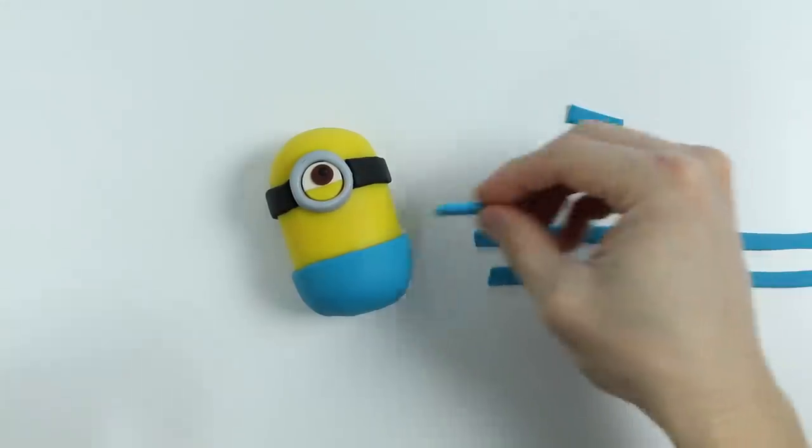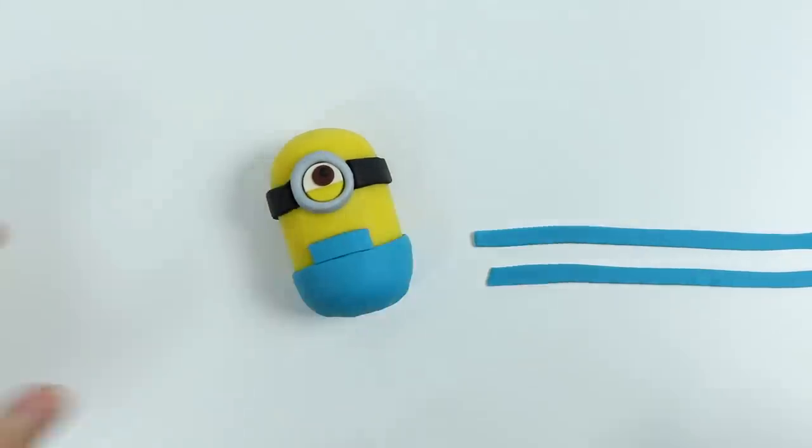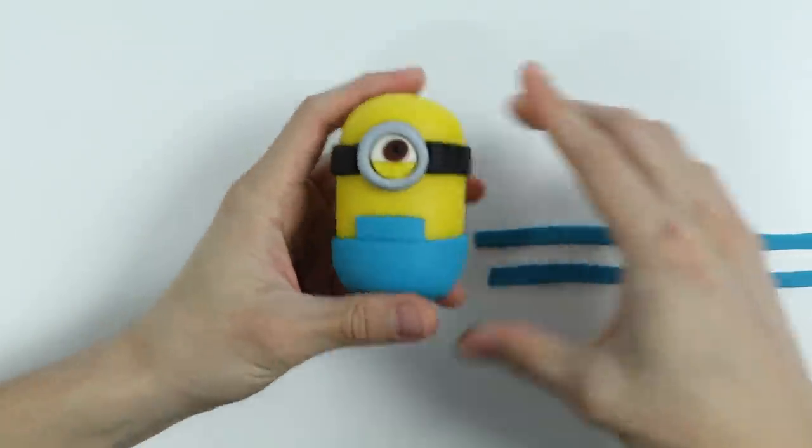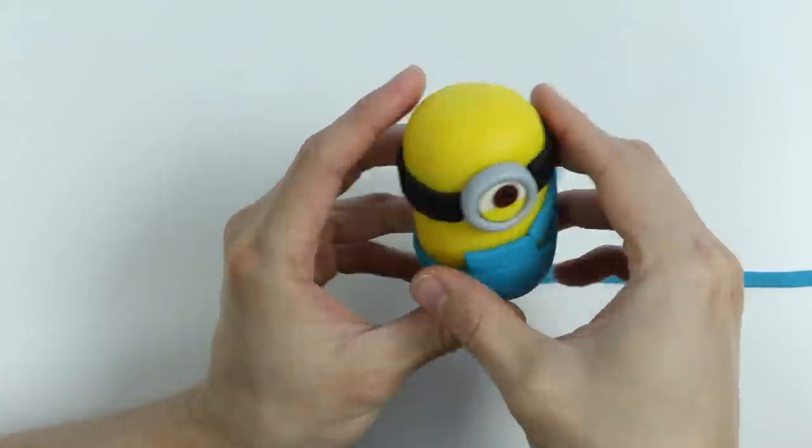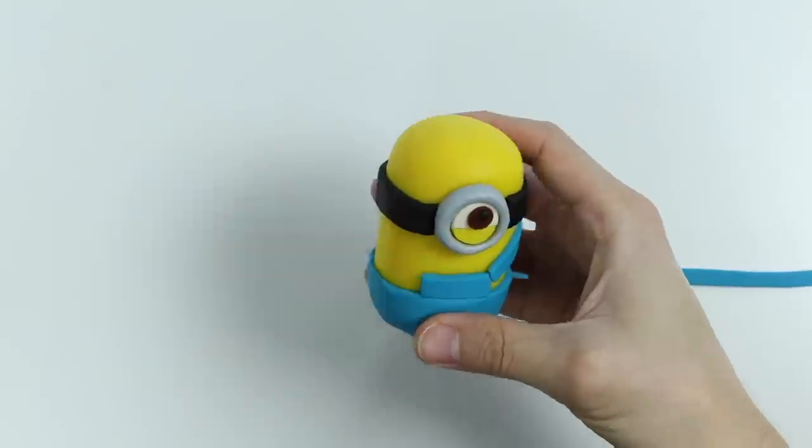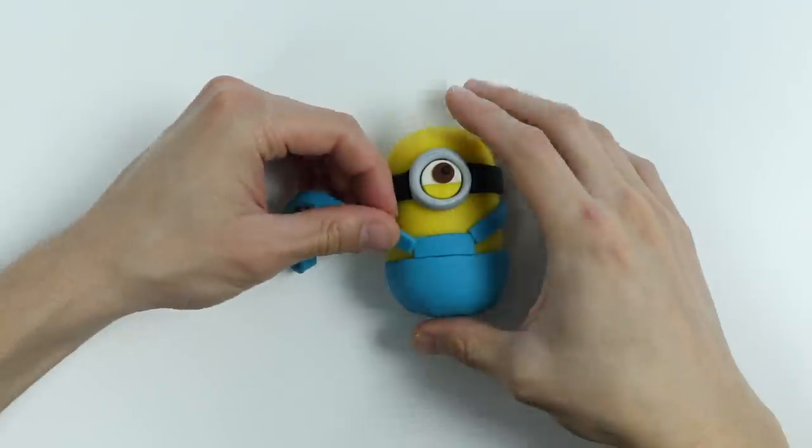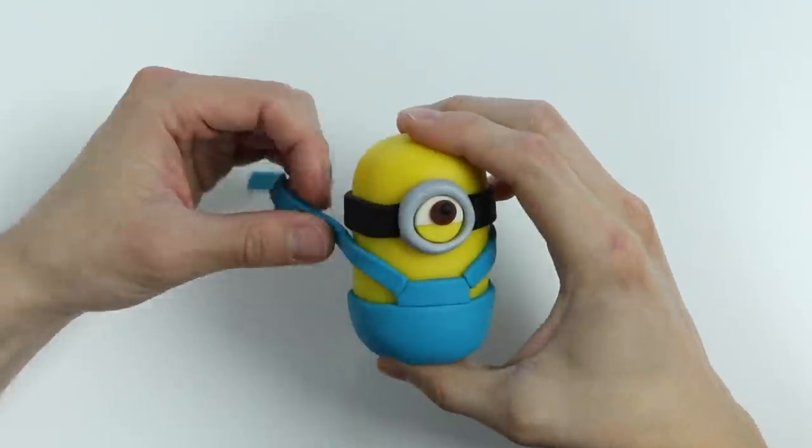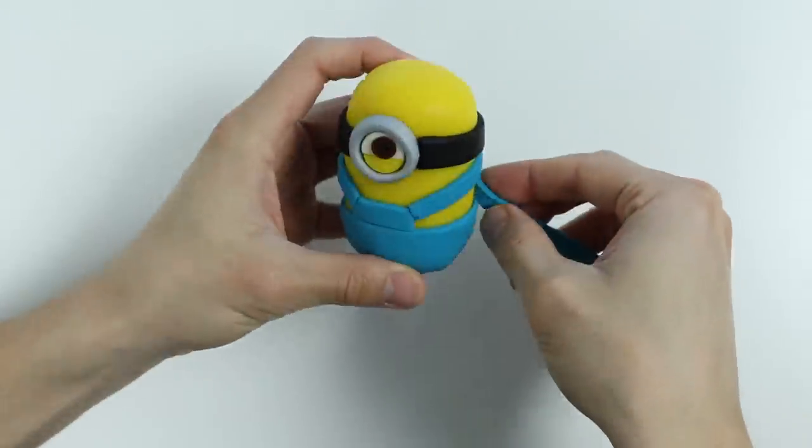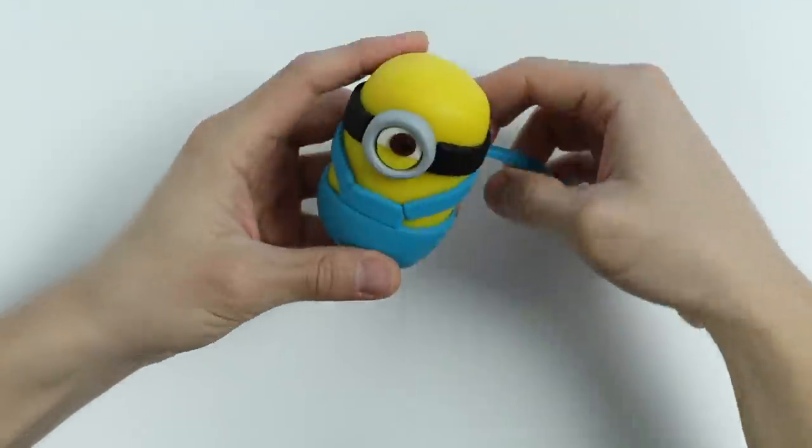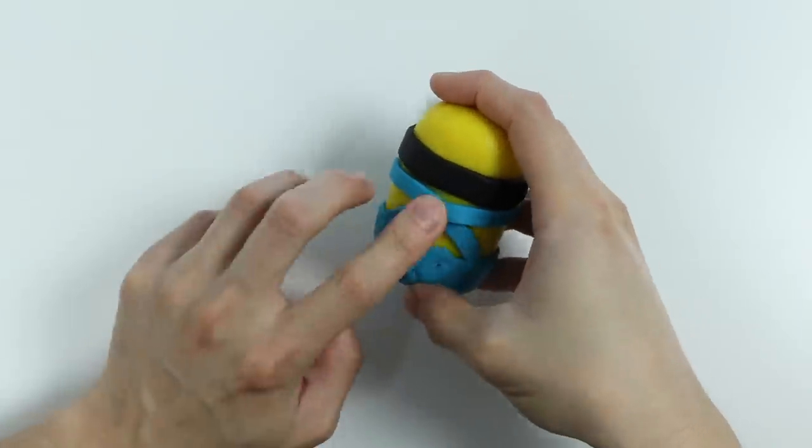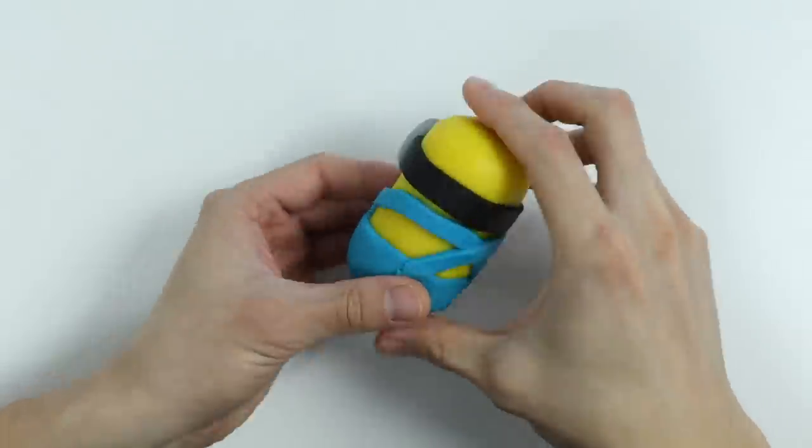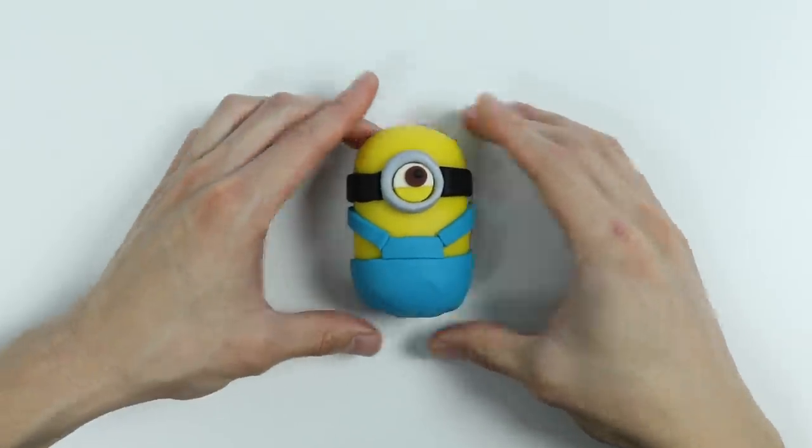And stick this right on the middle. It's his overall pocket. Now let's use these two pieces to make his overall straps. Give me a second. There we go! Check out Stewart's overalls.